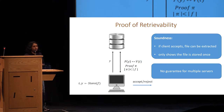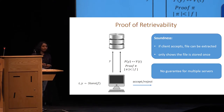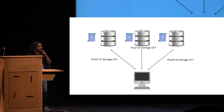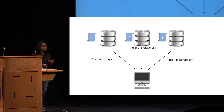The notion of security in proof of retrievability is that of soundness, which says that if the client accepts in this audit protocol, then there exists an extractor that can interact with the server and extract the file. But this notion only shows that the file is stored once and gives no guarantee when there are multiple servers. If the client insists that the servers give a proof of storage of F, this still does not solve the replicated storage problem, because even if the servers give valid proofs, it could be because the client is simply talking to one adversary and there is really only one copy of the file stored.